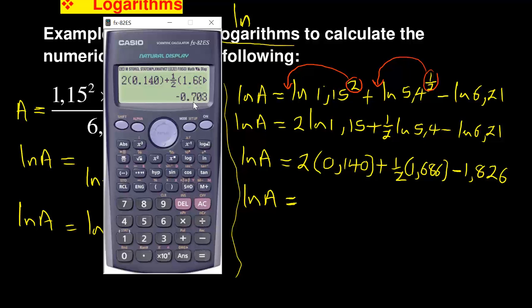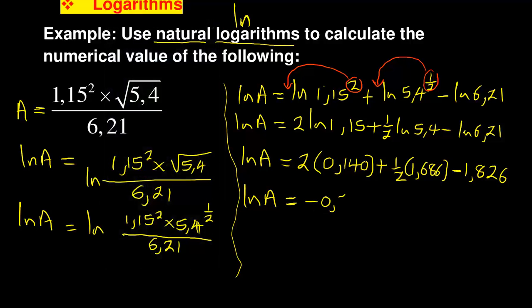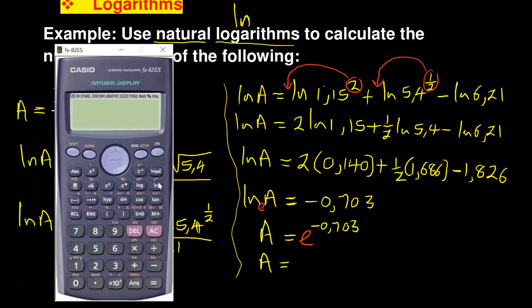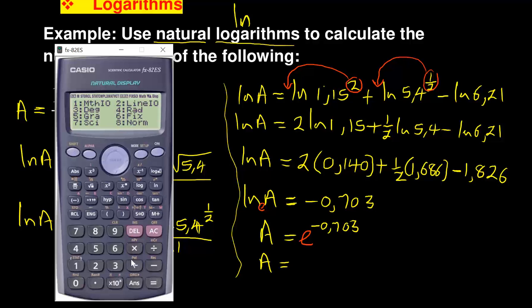If you say equals, you're getting negative 0.703. To find the final answer, remember that ln has base e hidden there. So A equals e to the exponent negative 0.703. Shift and e to the power negative 0.703, which is 0.495 when rounded to three decimal places.